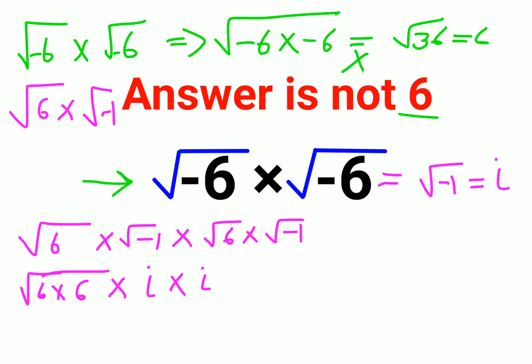i is basically an imaginary number. So now we know that root 6 into root 6 is nothing but just 6 and we get i square.